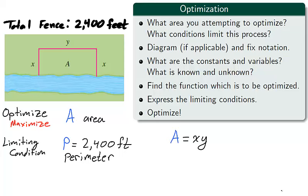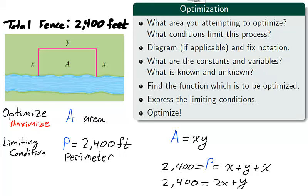We now can find the function which is to be optimized. The area of a rectangle is the product of its dimensions, x times y, and we can express the limiting condition P, which is equal to 2400, as x plus y plus x, the three sides of the rectangle we intend to enclose. The function A we wish to optimize has two variables, x and y, which are related through the limiting condition P. We can solve for the variable y and substitute it into the function A, and then A will be defined only in terms of x.